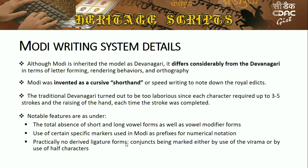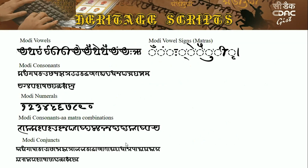Modi also uses conjuncts — consonant clusters formed with virama — marked either by the use of virama or half characters. A snapshot of the Modi letter forms is shown, including vowels, consonants, numerals, and matra combinations. This has been taken from a font our team designed and developed called the Modi Shahu font, which gives a glimpse of how Modi looks and how it displays.